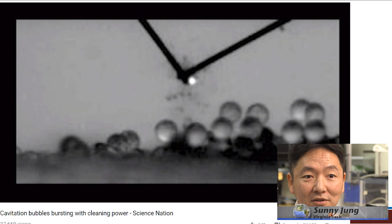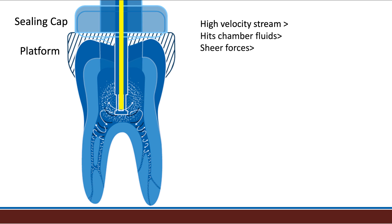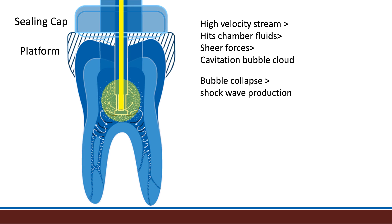To see how a cavitation bubble acts, let's look at work done by Sonny Young at Virginia Tech, where he creates a vapor bubble using an electronic spark. You can see in this high-speed video the vapor bubble formation, then the collapse producing a shock wave — it is this shock wave that energizes the chemistry. When you turn the instrument on, a thin, high-speed stream of solution comes down the sound bar and hits the stationary fluids in the pulp chamber. This high-speed stream produces a shear stress that locally reduces pressure, forming a vapor bubble that collapses and produces shock waves. The result is a continuous cloud of small cavitation bubbles that produces a range of shock waves of different frequencies. Since shock waves travel very well in an incompressible fluid like water, they easily travel to the end of the root canal and into the lateral anatomy. This multisonic energy activates the solutions deep in the canal and dramatically accelerates the chemistries of the solutions.